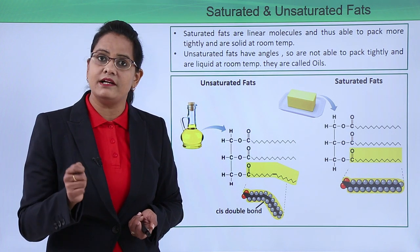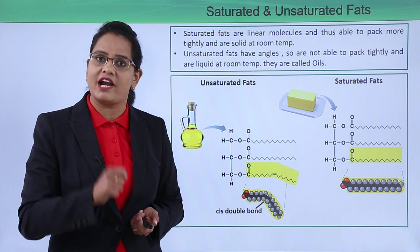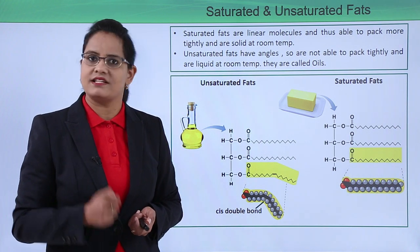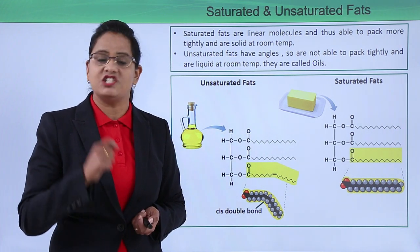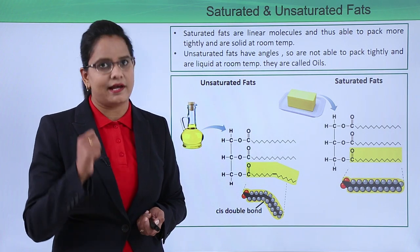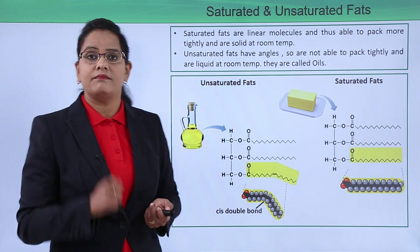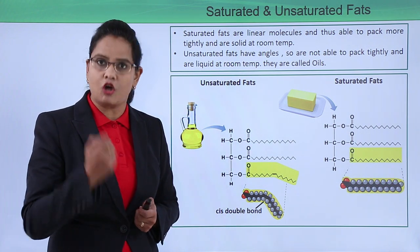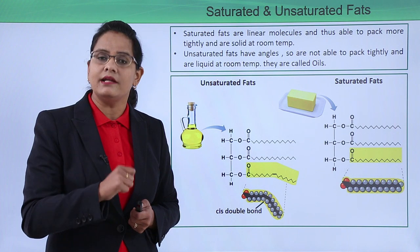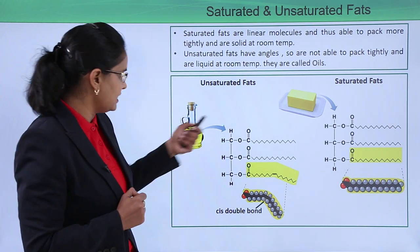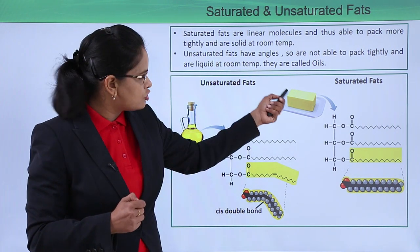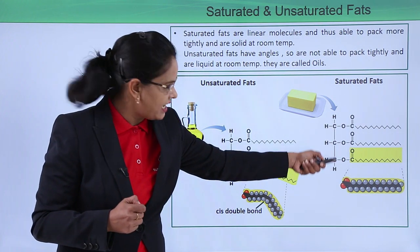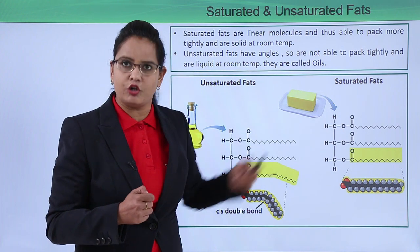Fatty acids are of two types — unsaturated and saturated — and similarly the fats they form are also of two types: saturated fats and unsaturated fats. Saturated fats, just like saturated fatty acids, are linear molecules. Because of this linearity they can pack on top of each other, so they are solid at room temperature and have a higher melting point. An example is butter, which has single linear chains of fatty acids.